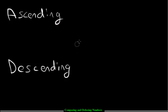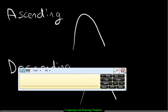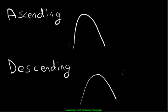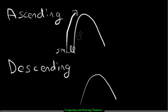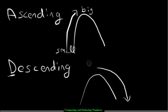Now let's take a look at a couple of definitions. We have the words ascending and descending. Draw a couple of mountains. Ascending means you're going up the mountain — you go from small numbers first and then write the big numbers last, from small to big. Descending — remember D for down — you're going down the mountain. You start with the big numbers first and then the smallest numbers go last.